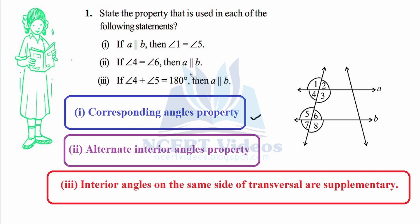The second statement: a is parallel to b and angle four equals angle six. Angle four equals angle two because they are vertically opposite angles — wherever an X-figure is formed, they are vertical. Angle two equals angle six because they are corresponding. Therefore, angle four equals angle six. This property is called the alternate interior angles property. Angles three, four, five, six are interior; one, two, seven, eight are exterior.